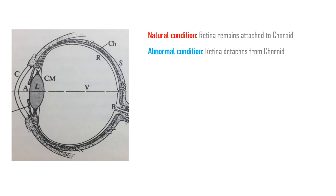injury or degenerative changes. If not promptly treated, it may result in blindness over the detached portion. The only way to overcome this problem is to reset the retina back to its original state by attaching it back to choroid. That's the medical problem eye surgeons can deal with today routinely by using laser.